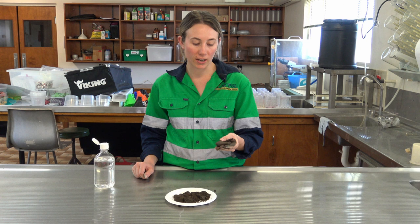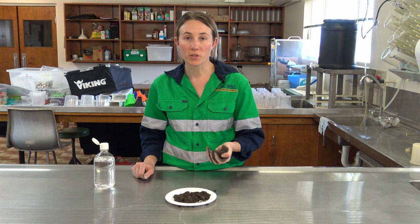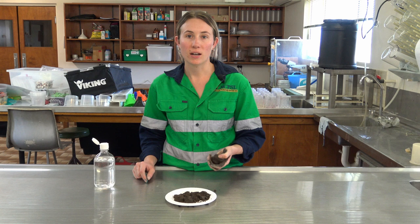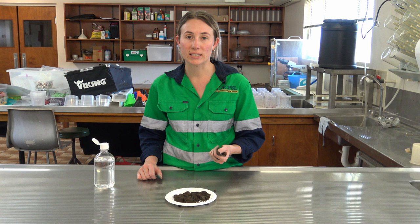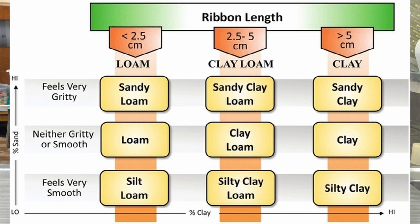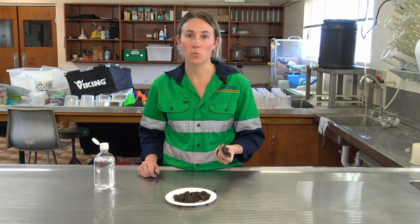If it was more sandy, our ribbon would have broken off a lot sooner — maybe about one centimetre. Whereas a soil with a higher clay content, you might get a ribbon out to five or six centimetres. And if you do want to have a look online, there are lots of tables that will give you an indication of how your ribbon length determines what texture you have occurring in your block.